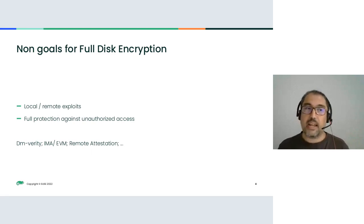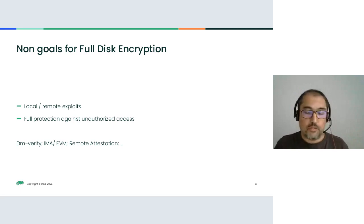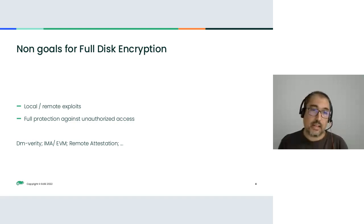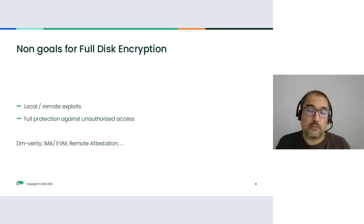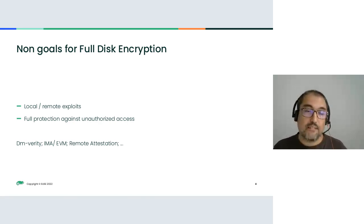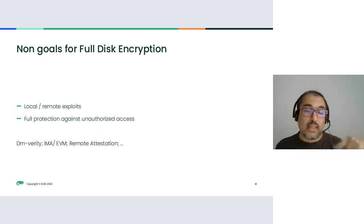There are clear elements that are not goals for disk encryption. In case of a local or remote exploit, this should be considered game over — if an attacker makes a local change, we need to consider that the secret has been leaked. Full disk encryption is not going to protect against unauthorized access while the system is running. For that there are other tools, like the embedded read-only system if it's image-based, IMA to attest binaries, and remote attestation in certain situations.